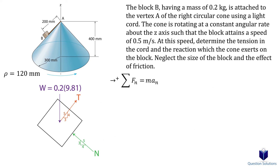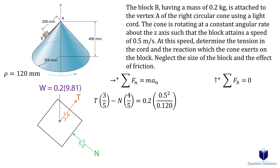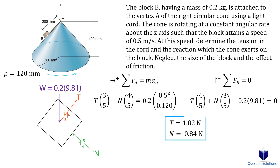We can now write our equations of motion. For the normal axis: the normal component of tension and the normal component of the normal force equal mass times normal acceleration — remember to use meters. For the binormal axis: the binormal component of tension, the binormal component of the normal force, and the weight all add up to zero. We now have two equations with two unknowns, so we can solve them any way we like. Solving gives us the tension and the normal force.